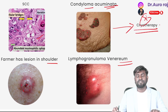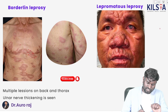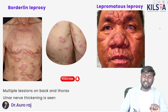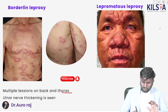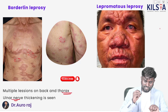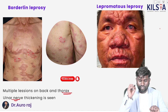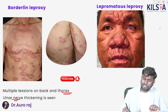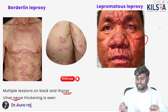This image shows borderline leprosy, with multiple lesions on the back and thorax. The node involved is the ulnar node; ulnar node technique is used in borderline leprosy. This image is lepromatous leprosy, also called leonine facies.